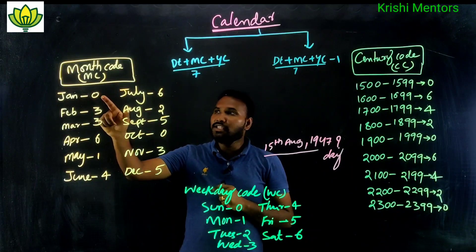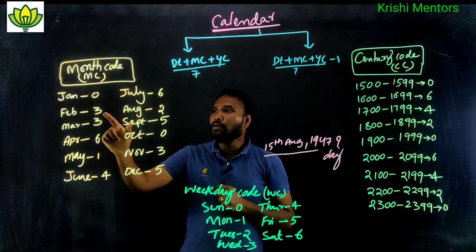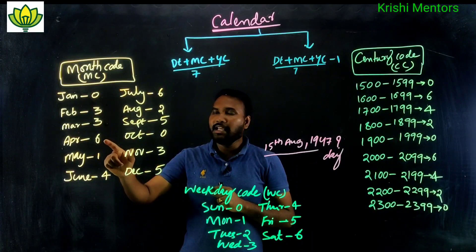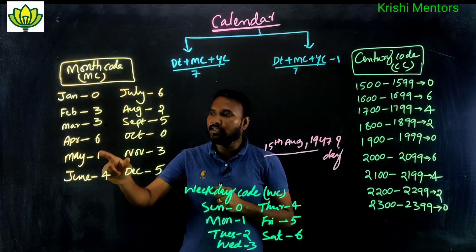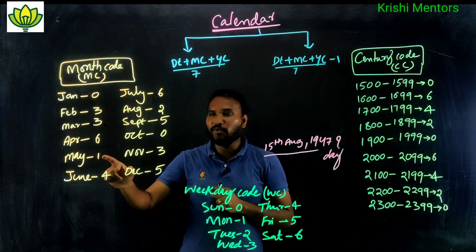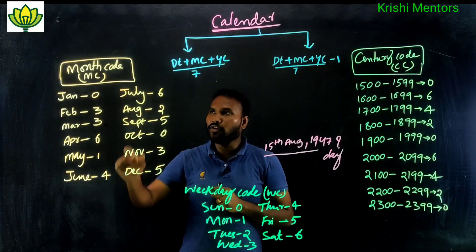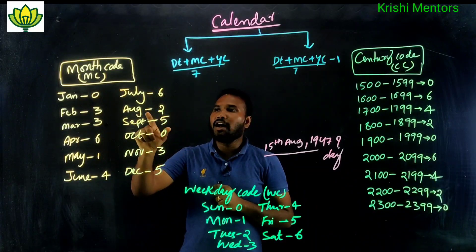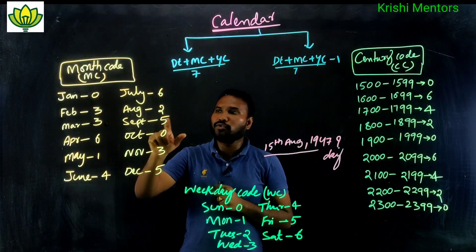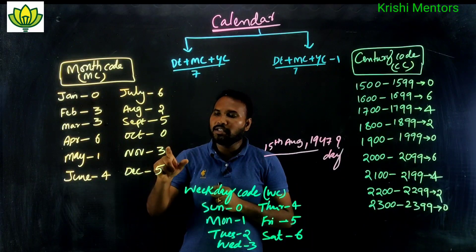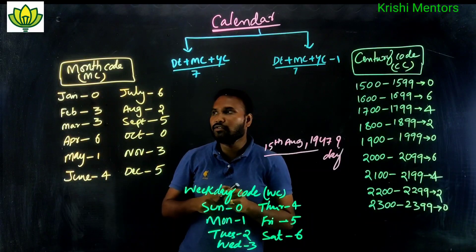The month codes are as follows: January = 0, April = 3, March = 3, April = 6, May = 5, June = 4, July = 6, August = 2, September = 5, October = 0, November = 3, December = 5.